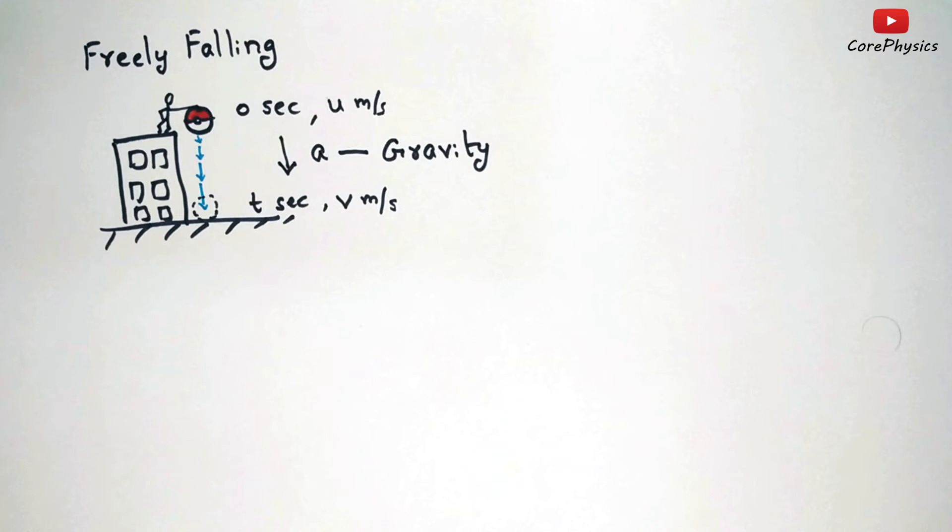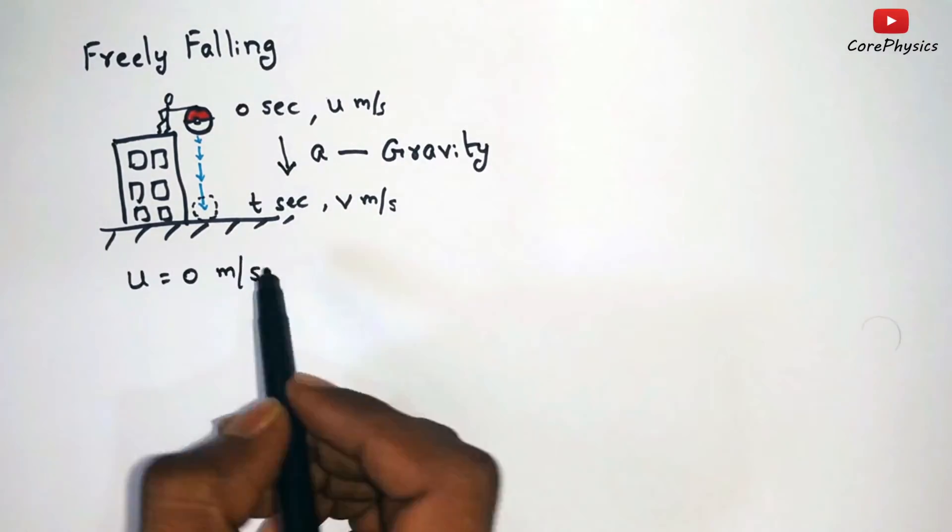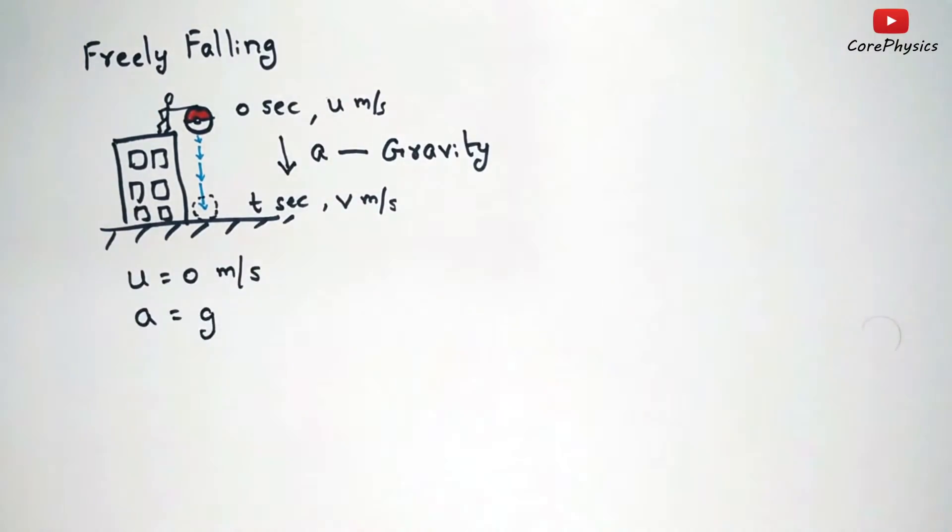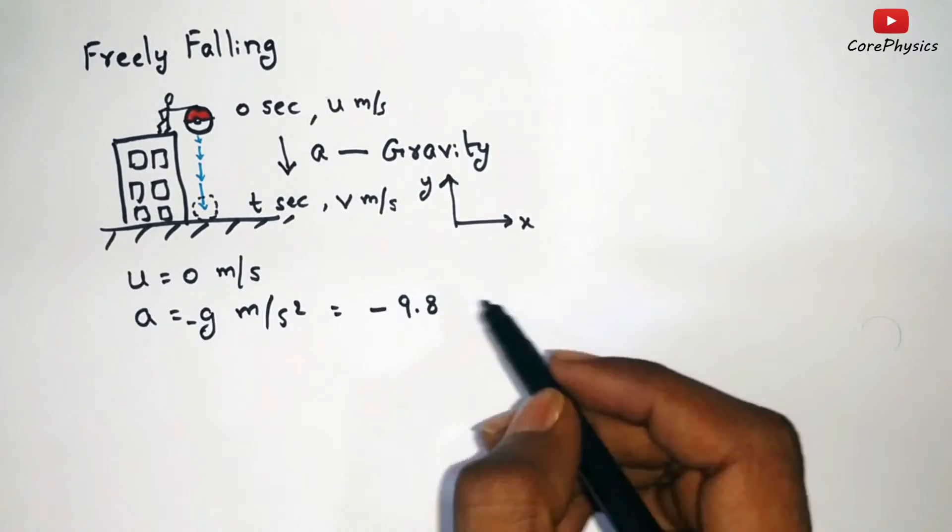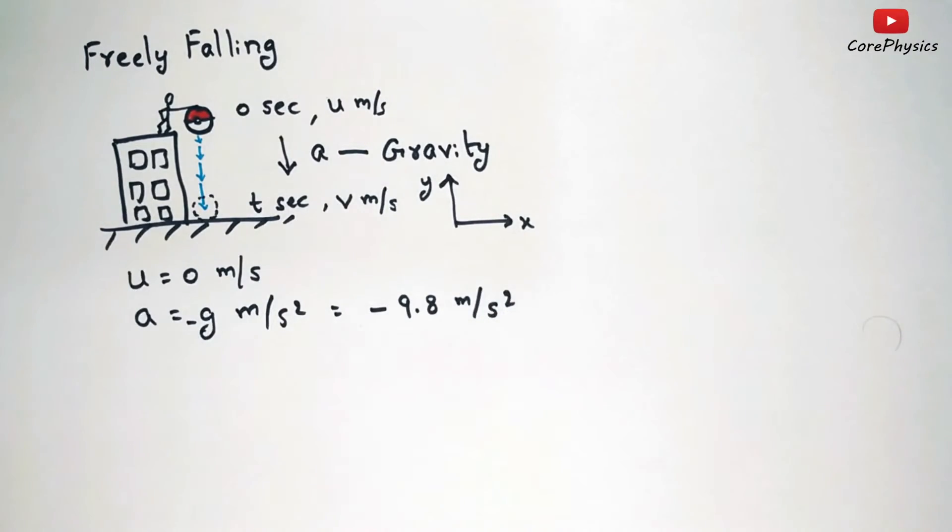If the ball is just left at the top of the building without giving any additional velocity then we can consider initial velocity to be 0. And if we take the y-axis in the upward direction then acceleration will be negative g. And the value of acceleration due to gravity for earth is 9.8 meter per second square.